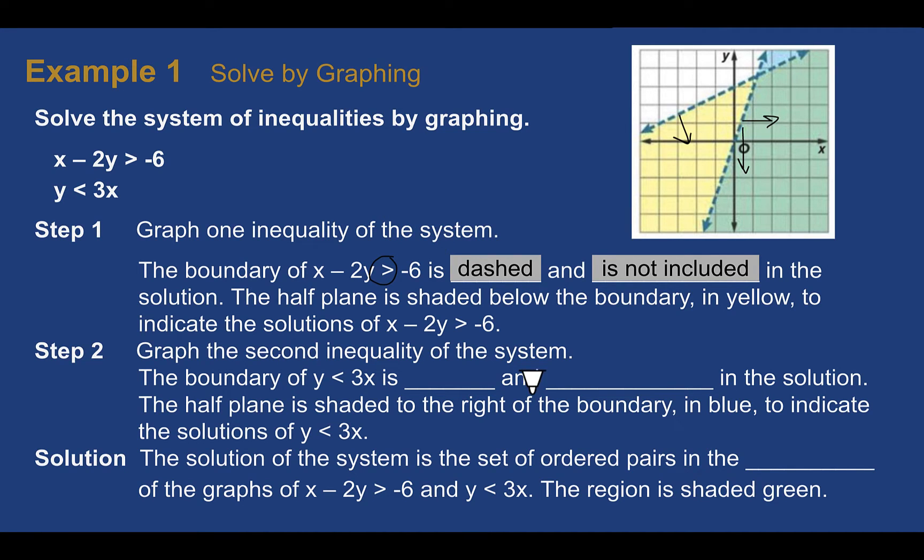Remember, you can tell if you're shading above or below by choosing a test point such as 0, 0. 0 minus 0 would be 0. Is 0 greater than negative 6? Yes. So that would be the area that you count. For the other inequality, it is also dashed. And also, it is not included. Though this time, if we choose a test point, let's choose 1, 1 to see where it's shaded. 1, 1. So this would be 3. Is 3 greater than 1? Yes. That area would also be included. So we shaded where our test point was.